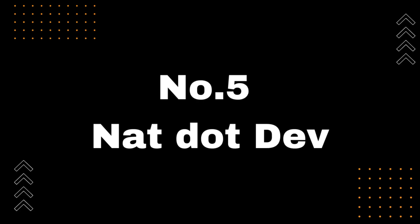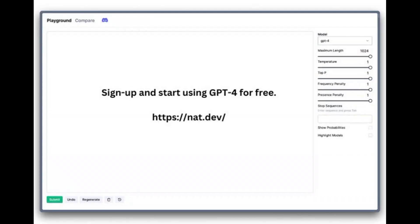Number 5: Nat.dev. Developed by Nat Friedman, the former CEO of GitHub, Nat.dev is an awesome tool that offers free access to GPT-4. All you need to do is sign up and you can start using it right away.